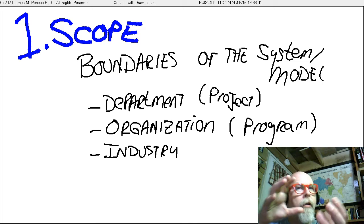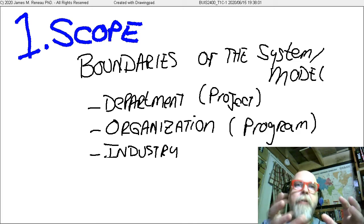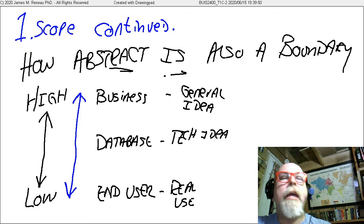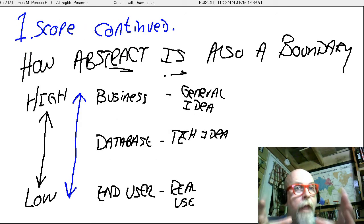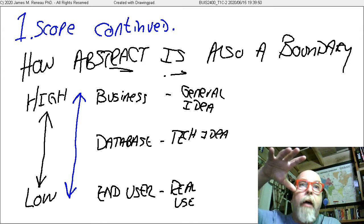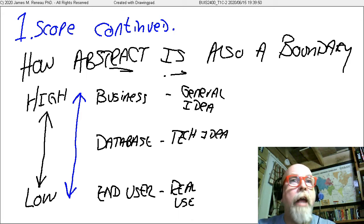Now, because data models are representing data, and data is kind of multidimensional, data models also have another type of scope, and I'm going to show that in the next slide.